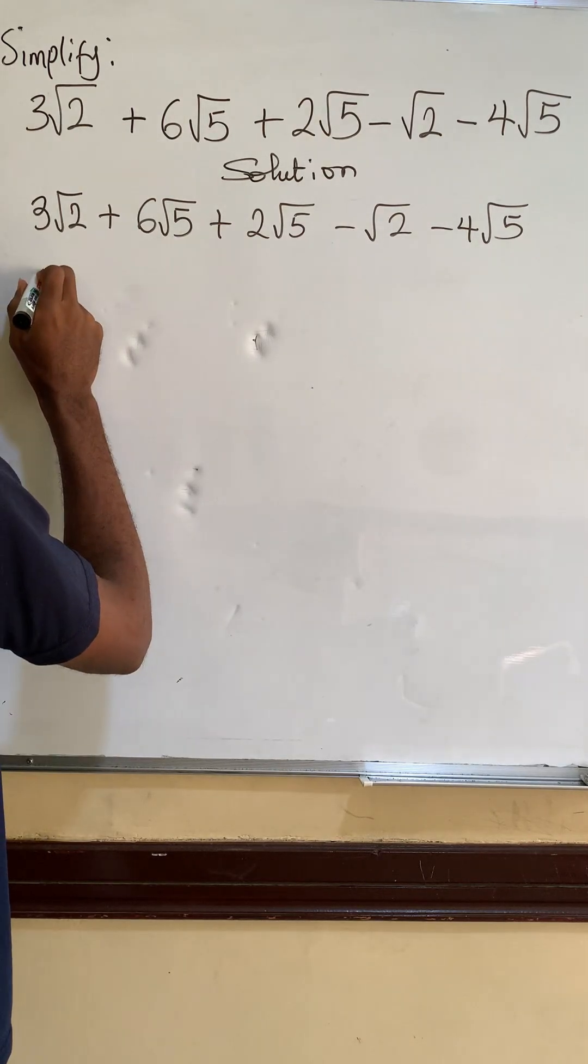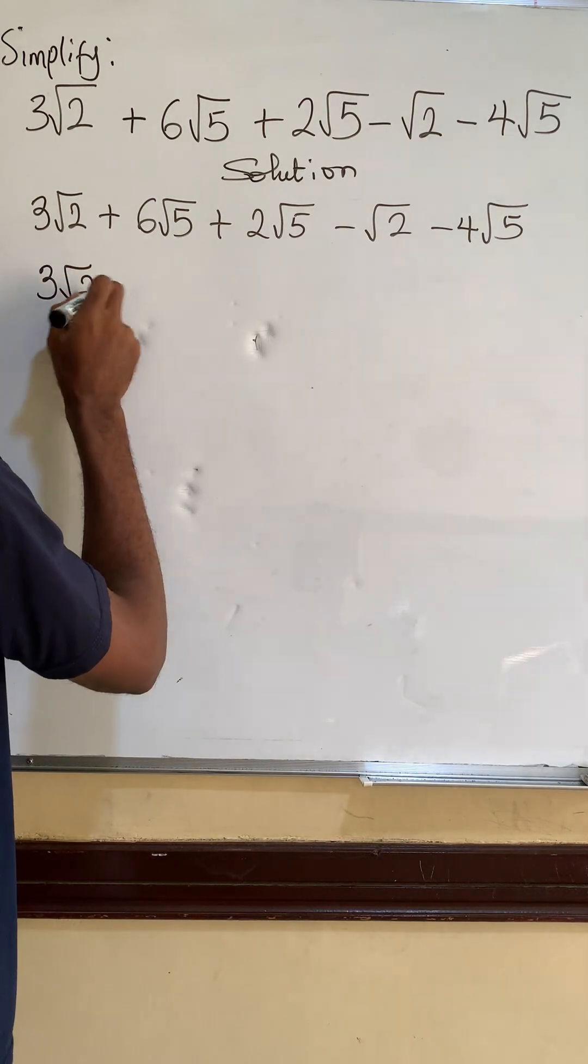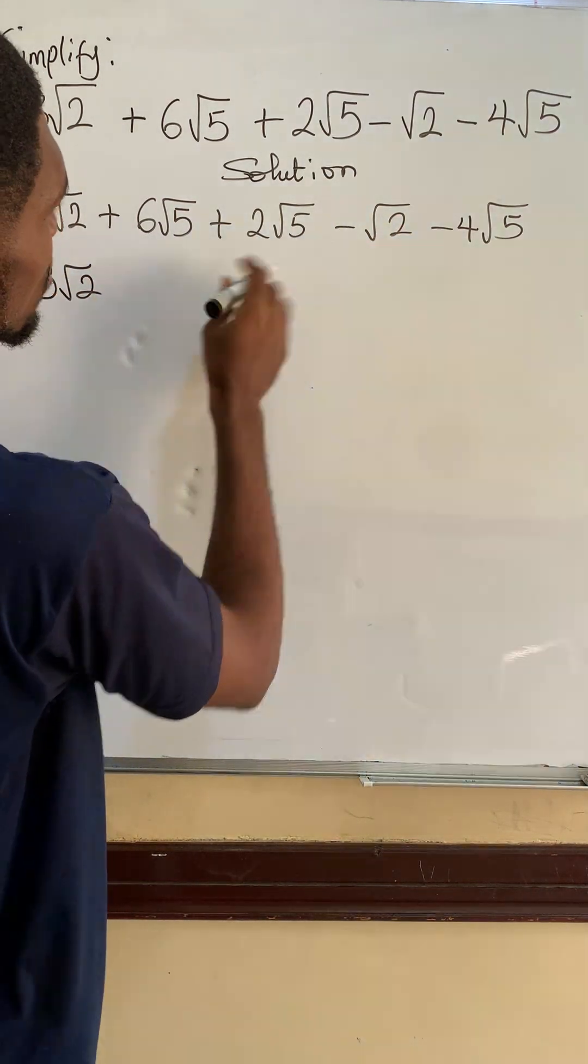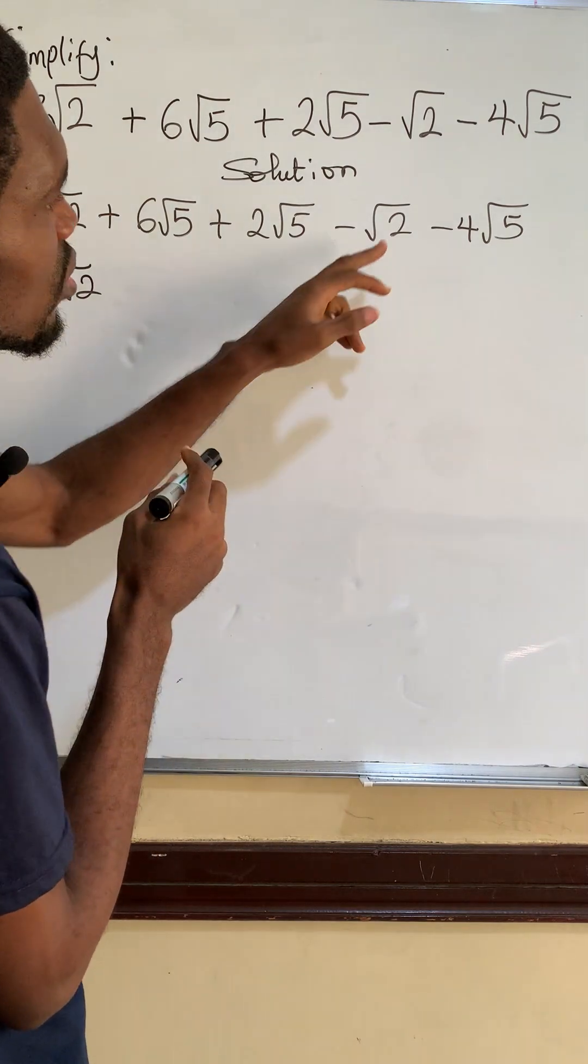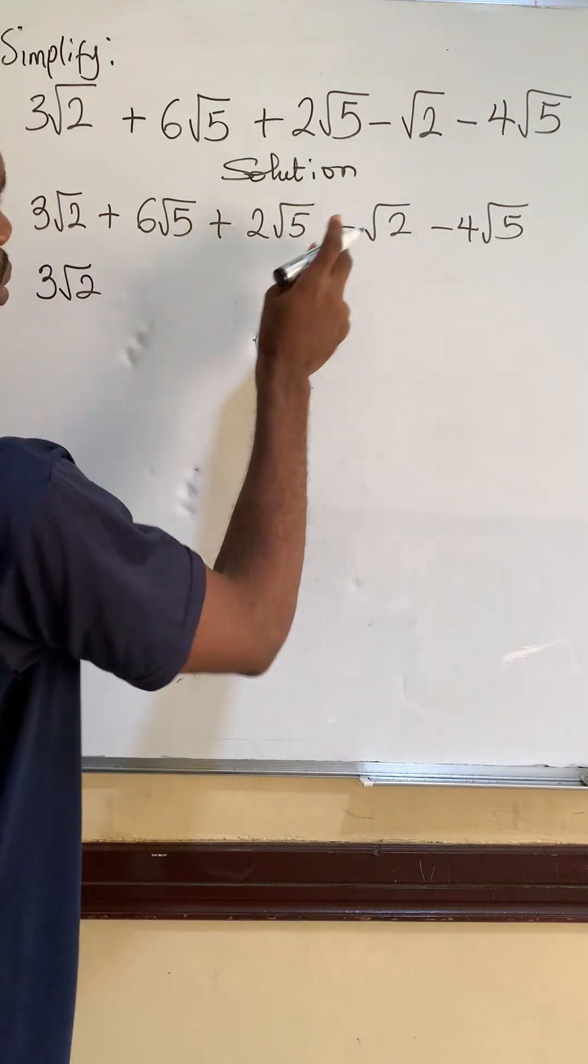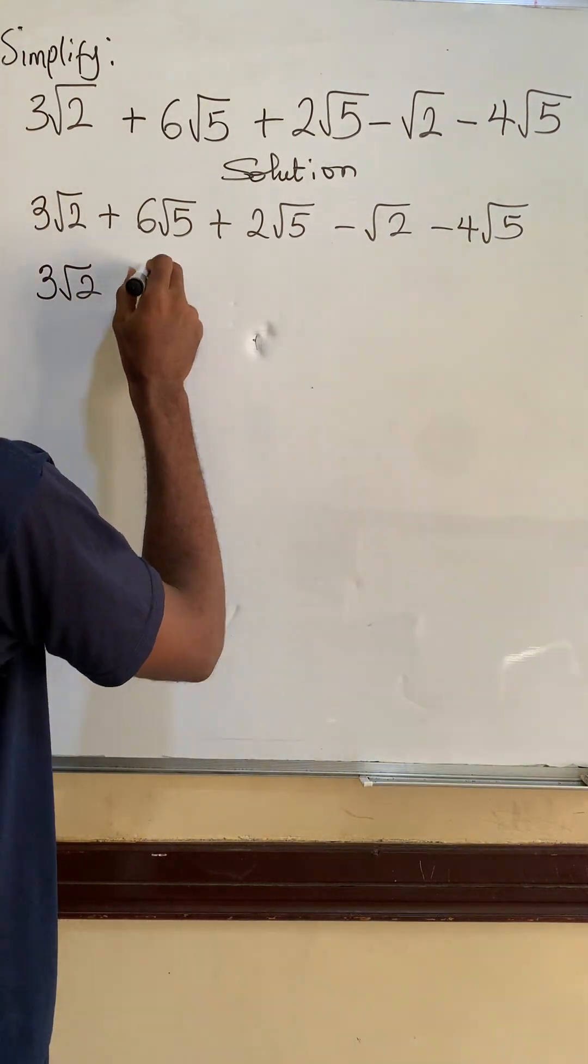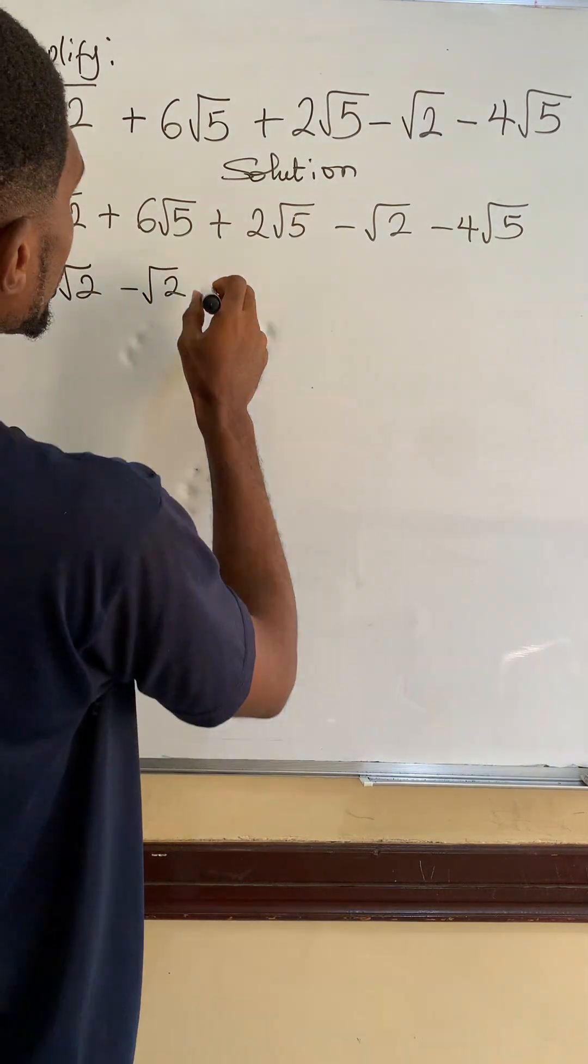Let's collect terms now. We have 3 root 2, let's look for another place that has root 2, which is this, and we have it as minus root 2.